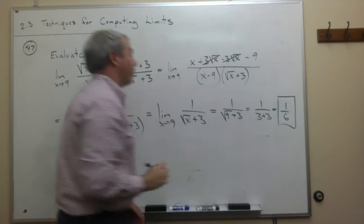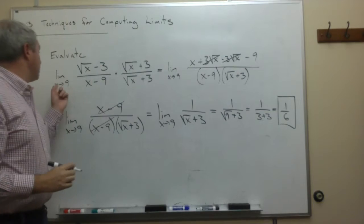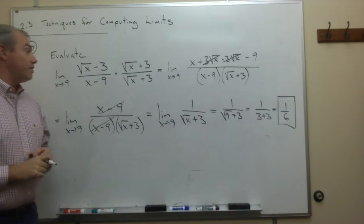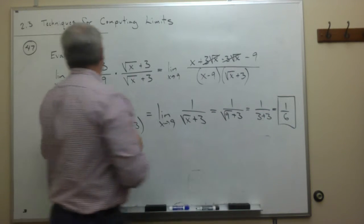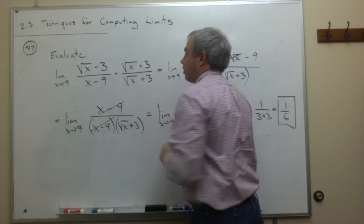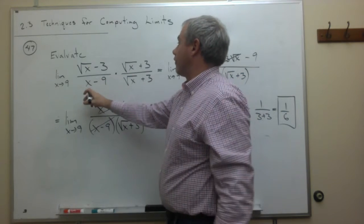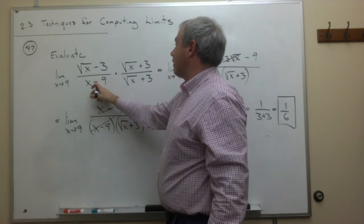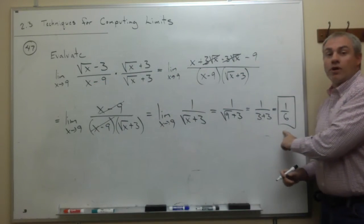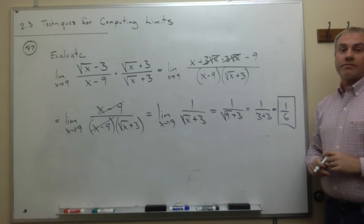So, the limit as x goes to 9 of the square root of x minus 3 over x minus 9 ends up being 1 sixth.